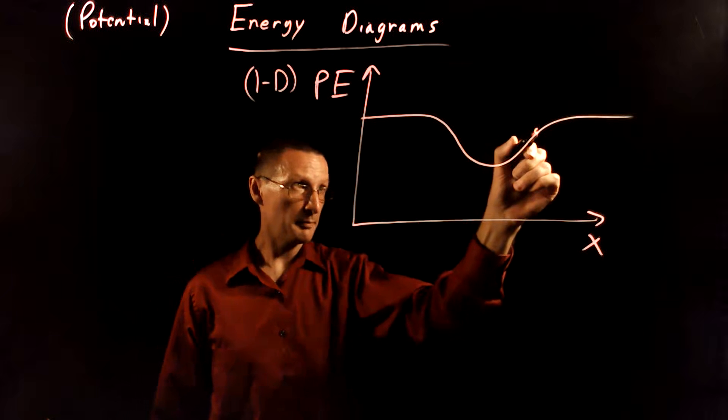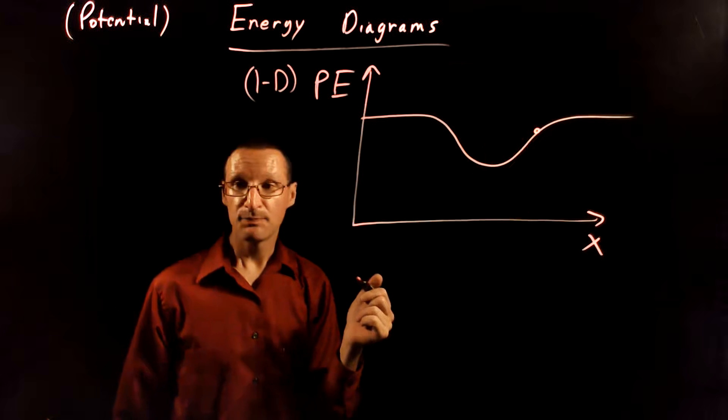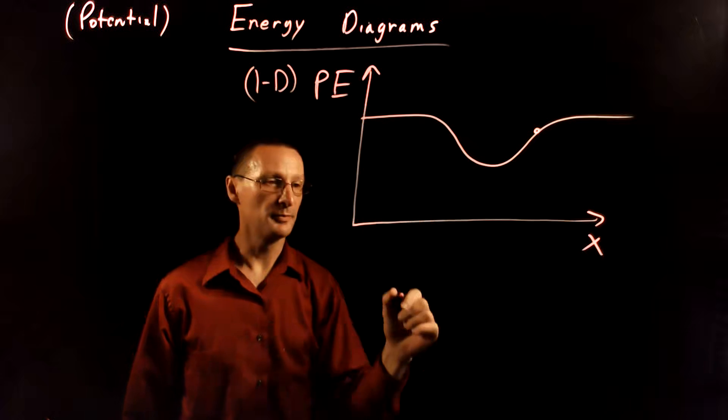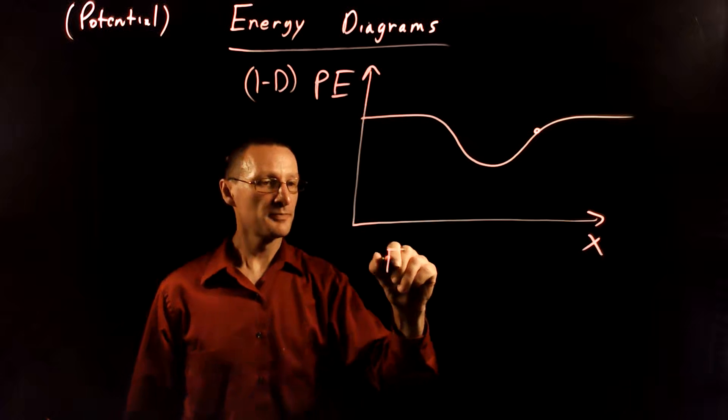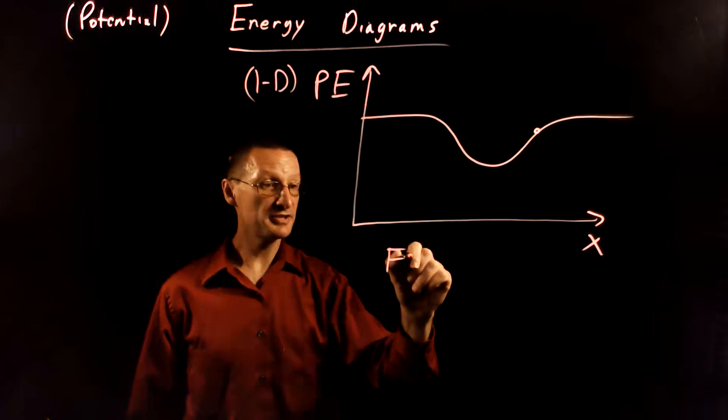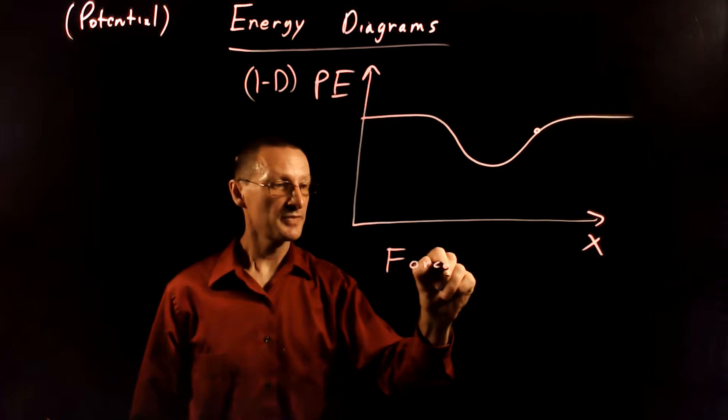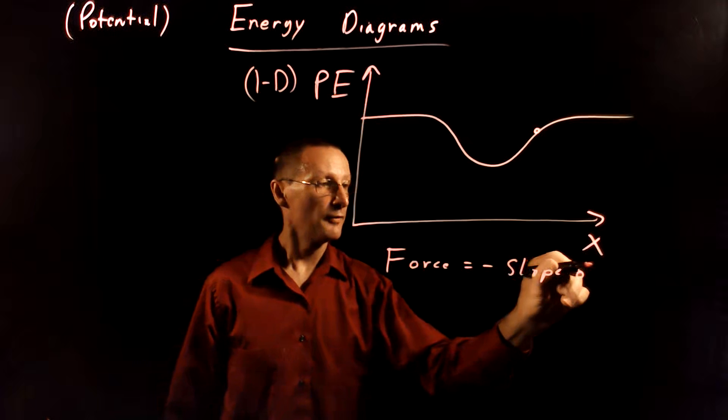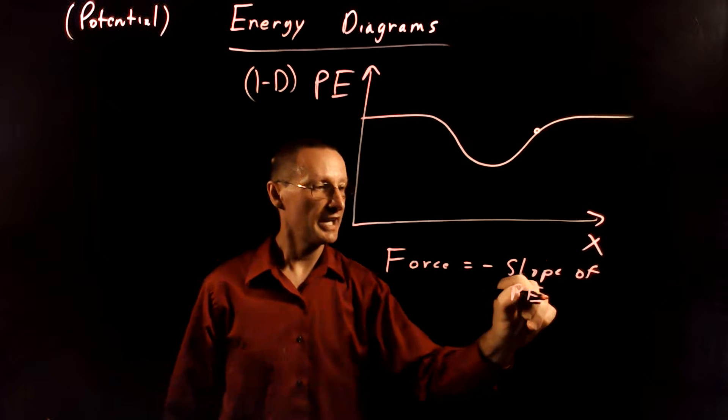So what happens if we put a ball right here and the question we want to ask is what force does it feel? Well, the connection between the force and the potential energy diagram is that the force is going to be equal to the negative of the slope of the potential energy diagram.